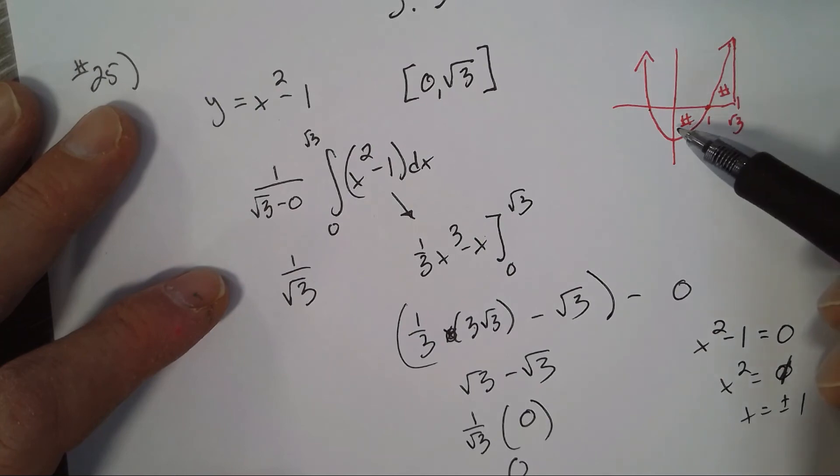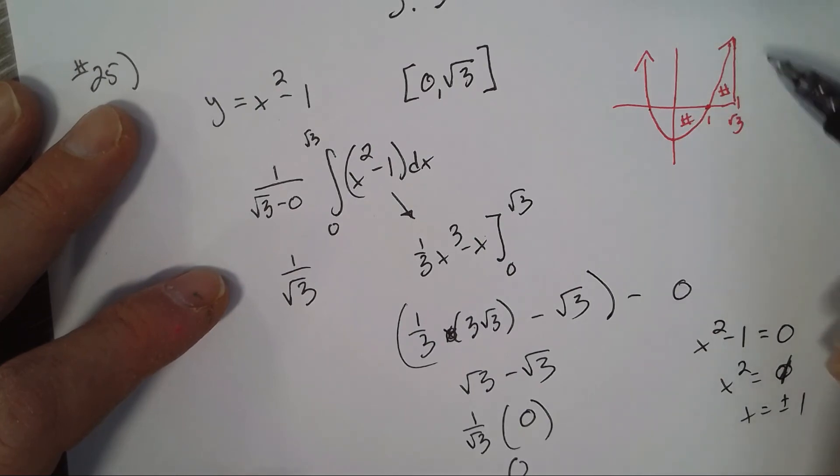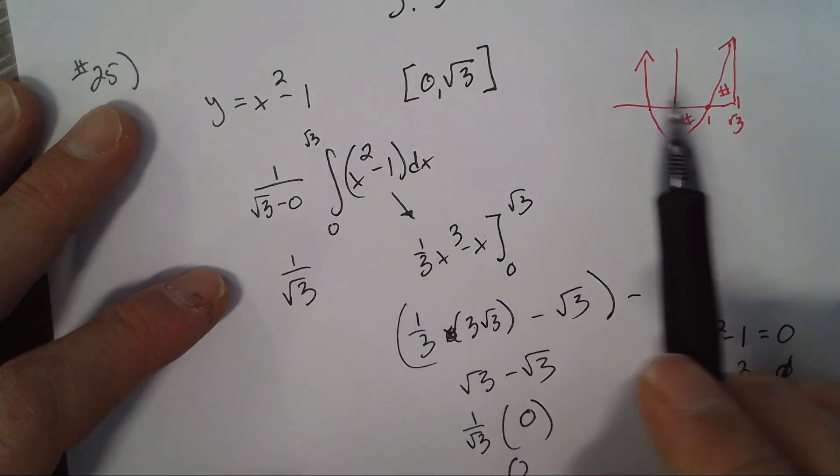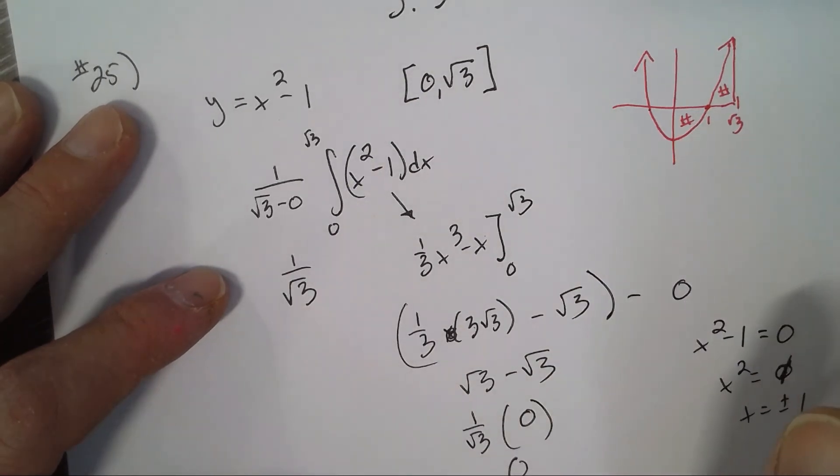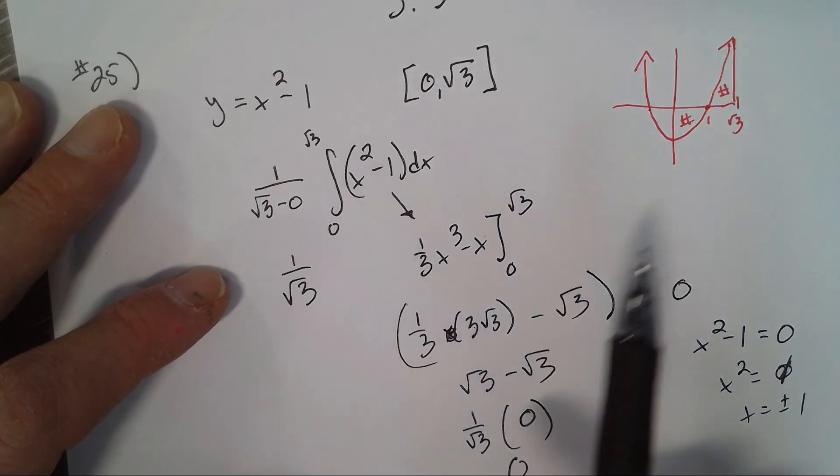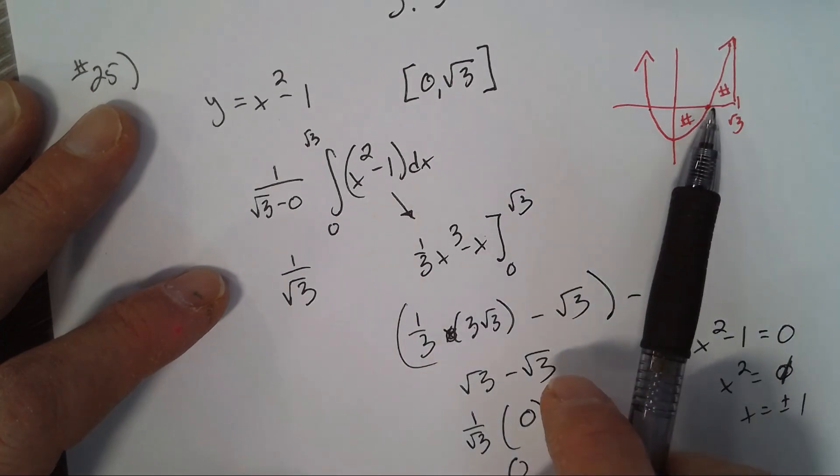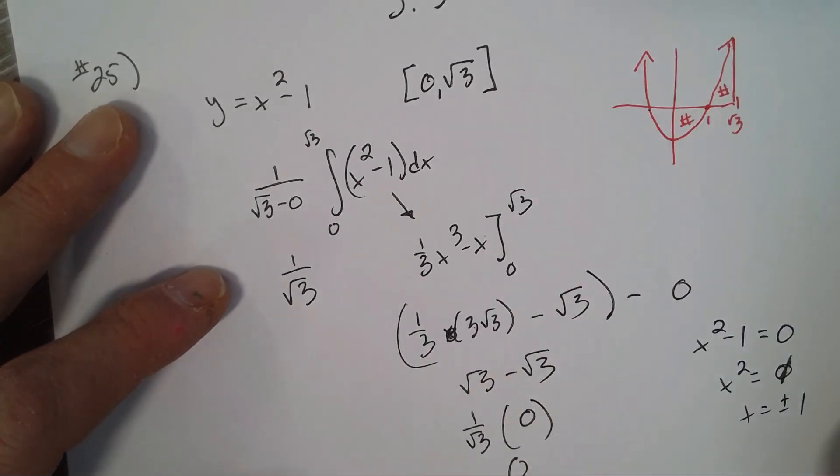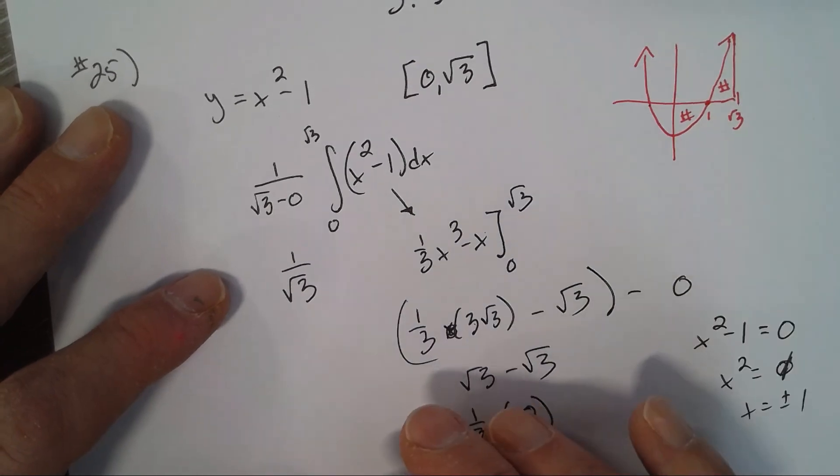So 0 to square root of 3, the function must equal the average at some point if it's differentiable and continuous. So the average is 0, and it does indeed become 0 at one point on the interval.